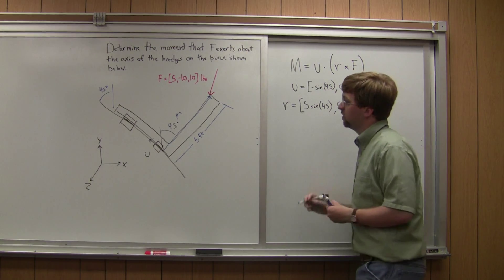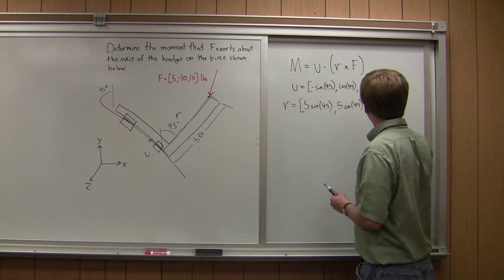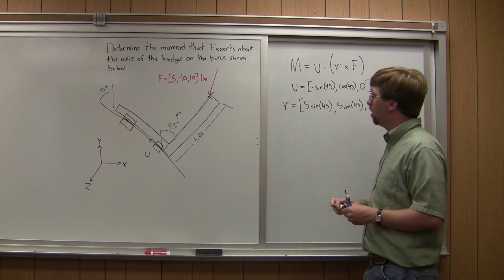And in the z direction, again, since there's no in or out of the board for this R vector, it's going 0. All right.